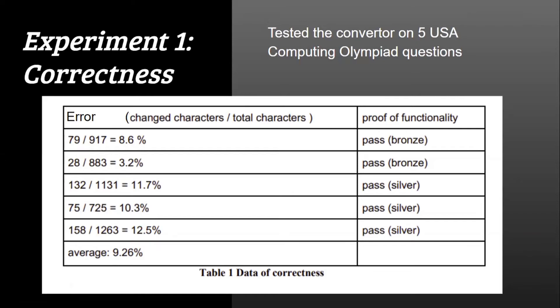Since after manually fixing the code the experiment demonstrates it works just as well as the original Python code by passing the USACO problems, the conclusion from this experiment is that in the field of algorithm-building, after fixing about 9% of the converted Java code, it will have the exact same functionality as the original Python code using our converter.